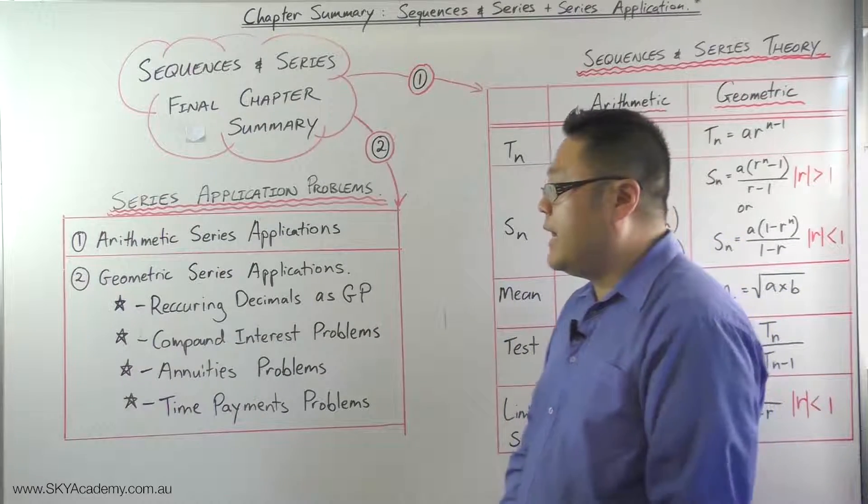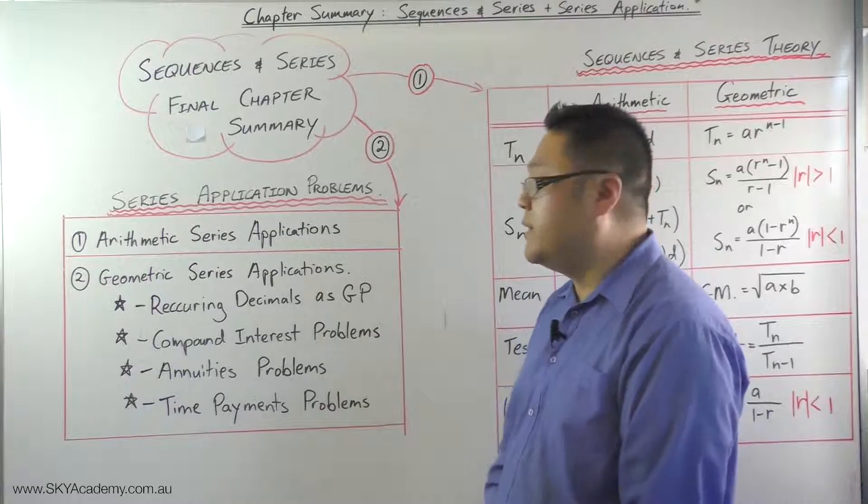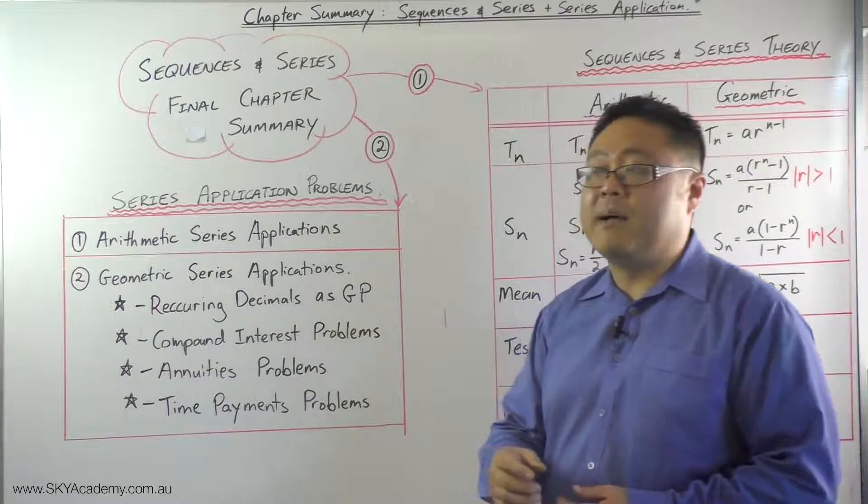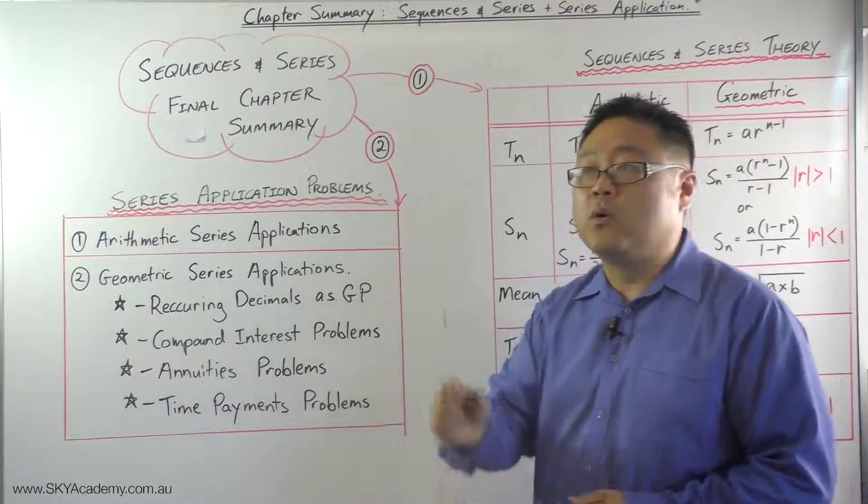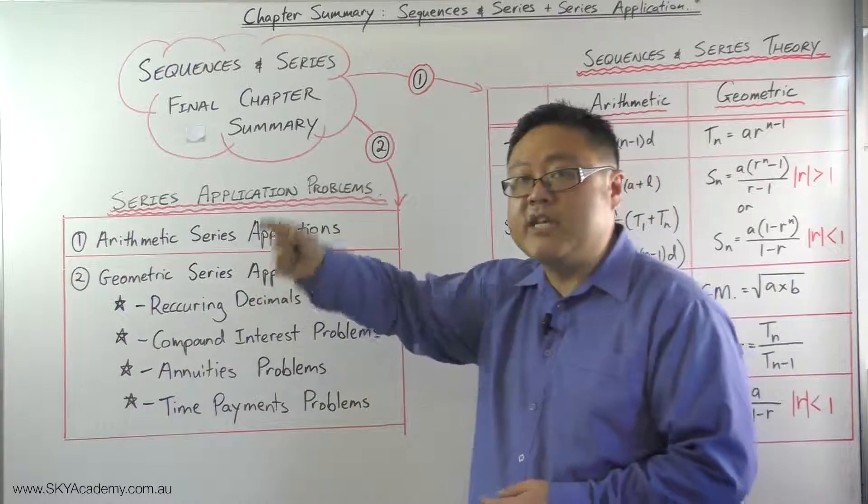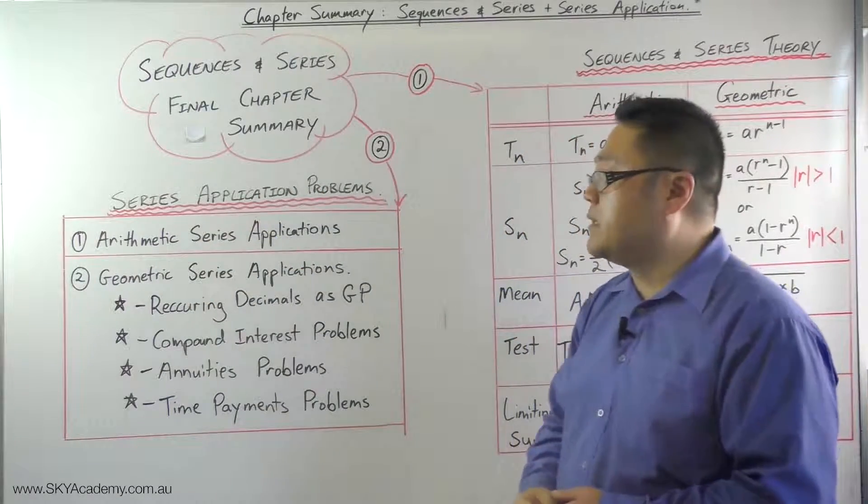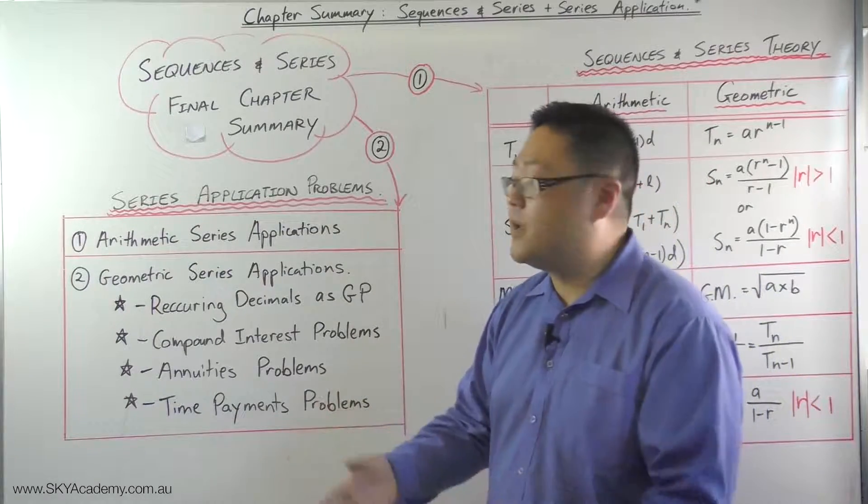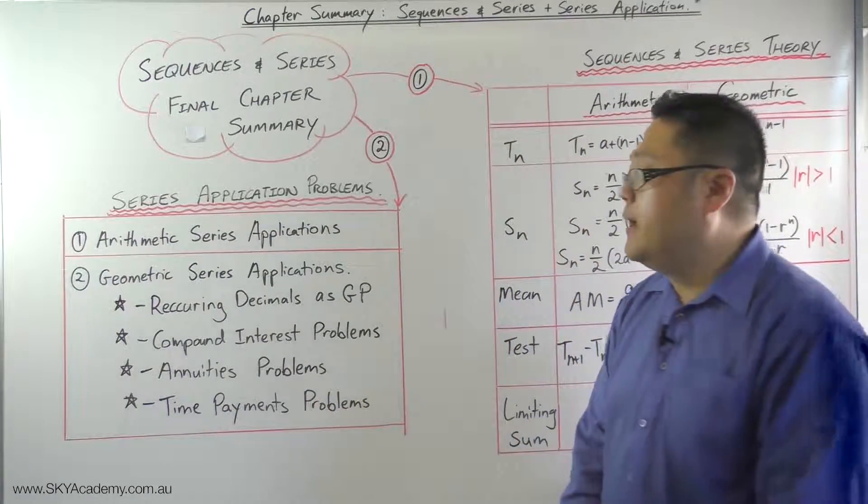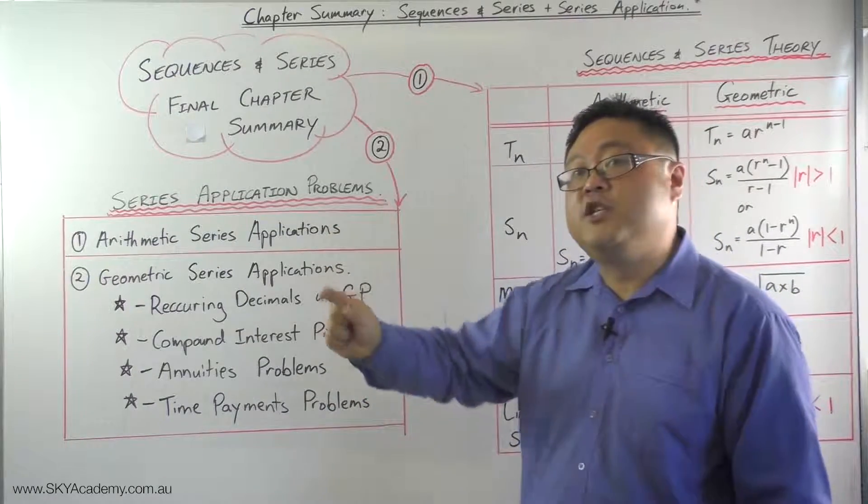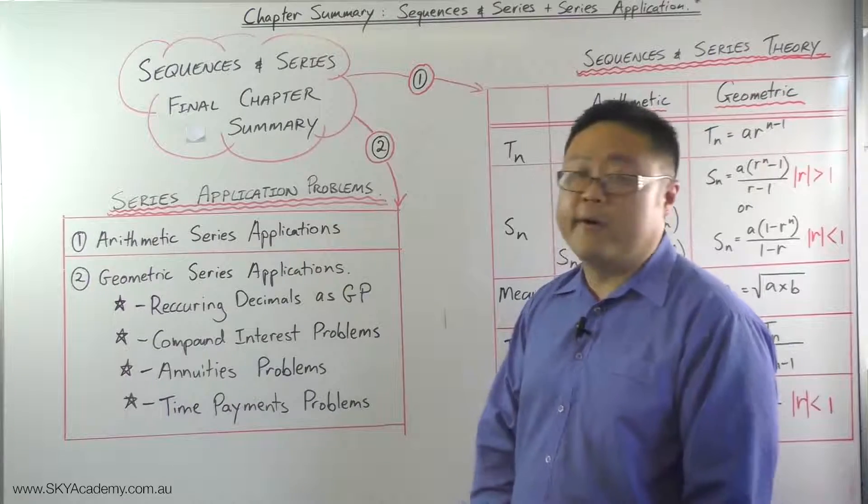One is recurring decimals. And basically a recurring decimal is a geometric series because you've got each decimal place, each place value is basically going up by a common ratio of 10 or 0.1. So that's your common ratio, and your first term is basically your first digit in your recurring decimal.